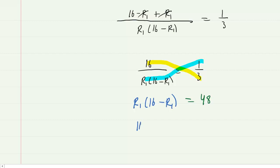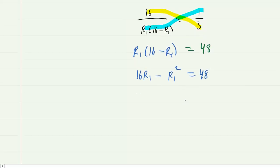Let's distribute the R1. So we'll have 16 R1 minus R1 squared equals 48. We will move the 48 and rearrange the terms. So we'll have negative R1 squared plus 16 R1 minus 48 equals 0.